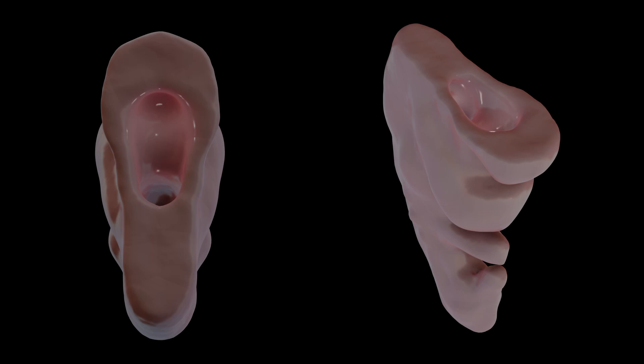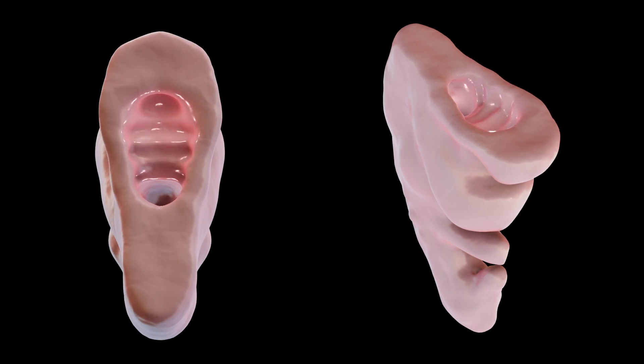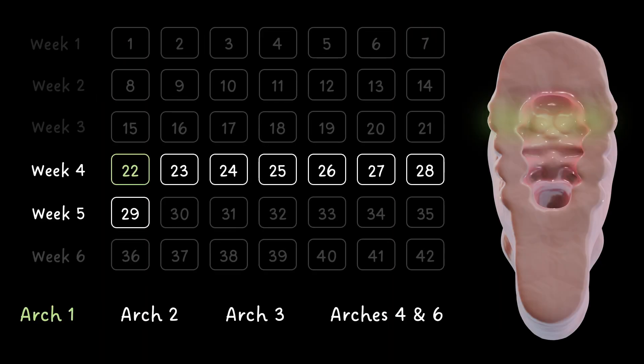Now, while I've shown the arches forming at the same time in this animation, they actually form in a craniocaudal sequence. Arch one appears on day 22, arches two and three on day 23, and arches four and six on day 29.